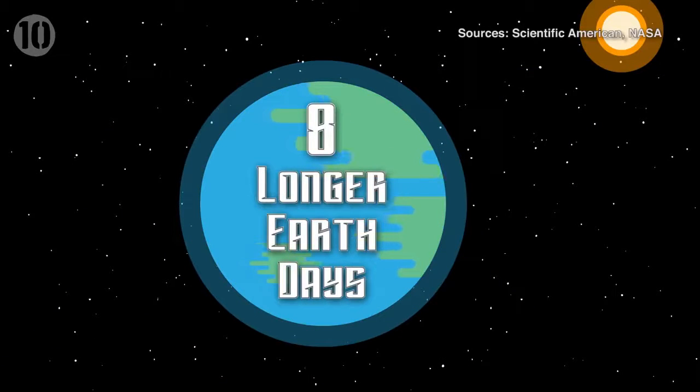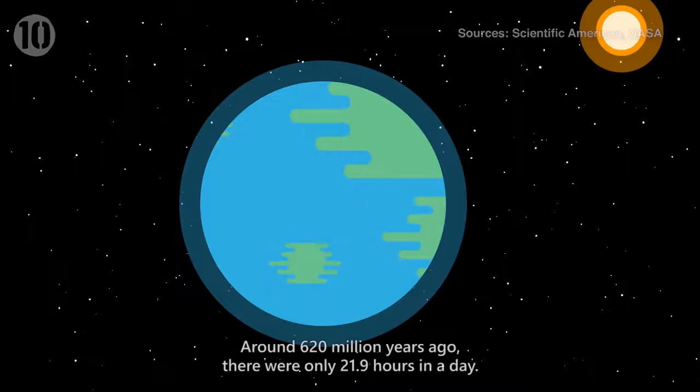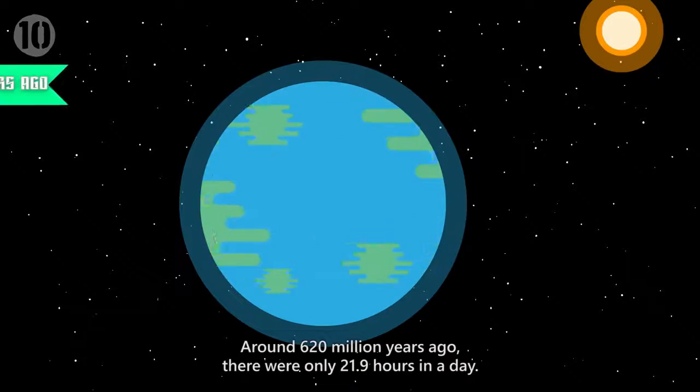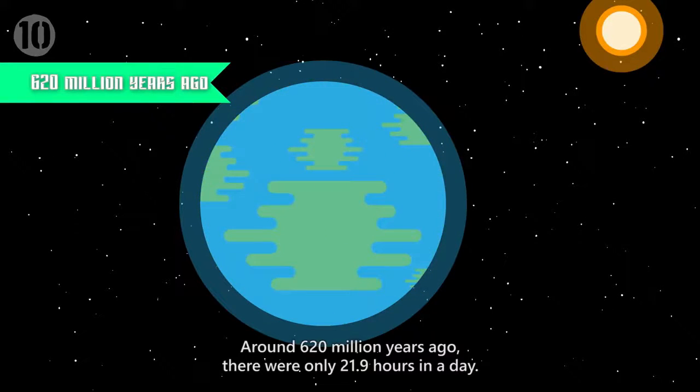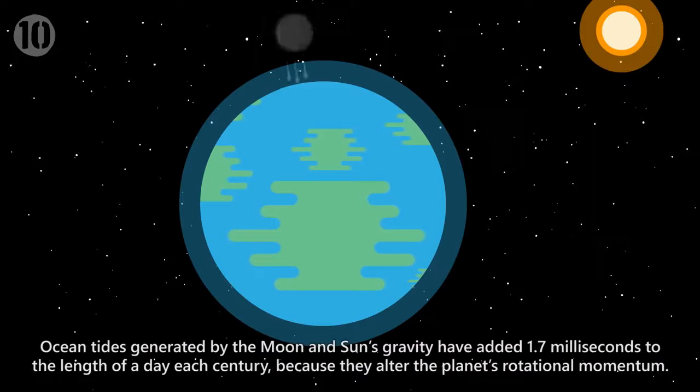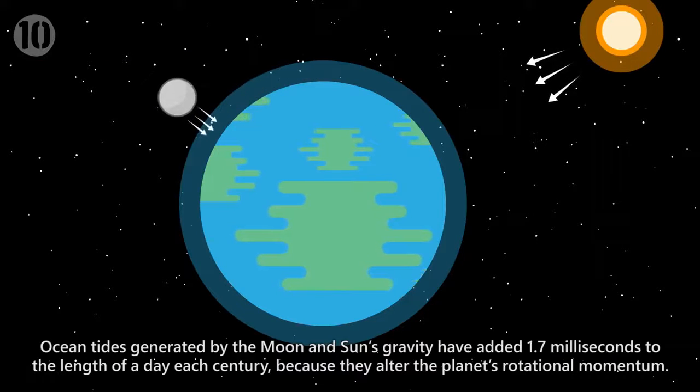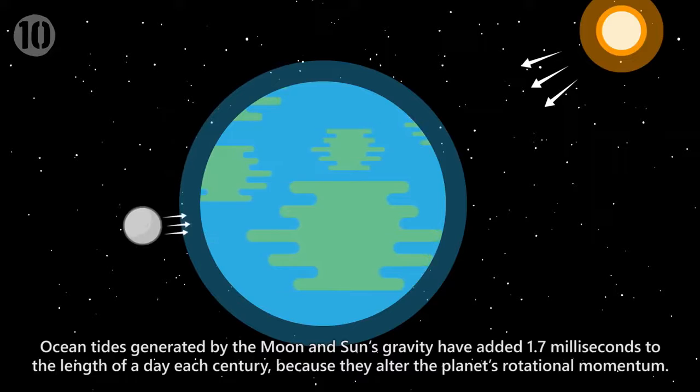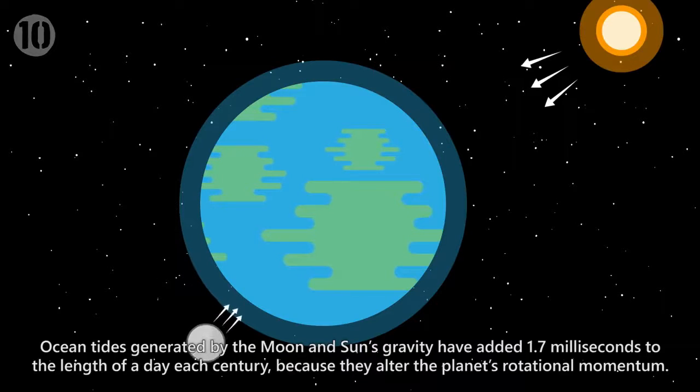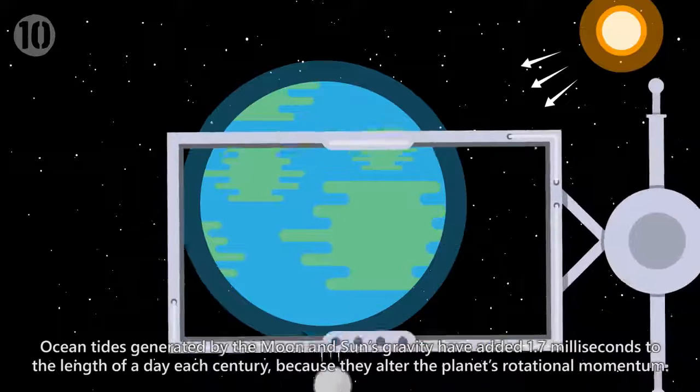Number 8: Longer Earth Days. Around 620 million years ago, there were only 21.9 hours in a day. Ocean tides generated by the Moon and Sun's gravity have added 1.7 milliseconds to the length of a day each century, because they alter the planet's rotational momentum.